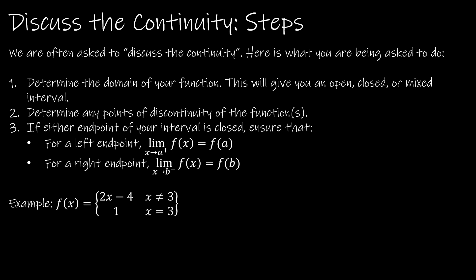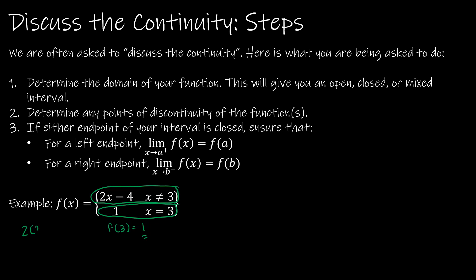This is a piecewise function. Analytically, when x does not equal 3 this is a continuous function, and when x does equal 3 this is also continuous. So the only point I have to be concerned about is when x equals 3. When x equals 3, the actual function is defined as 1. In order for this function to be continuous, 2x minus 4 has to equal 1 at x equals 3. But 2 times 3 minus 4 is 6 minus 4, which is 2, and 2 does not equal 1. So this is discontinuous at x equals 3.